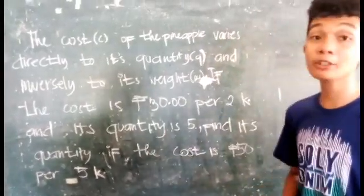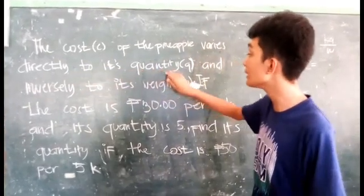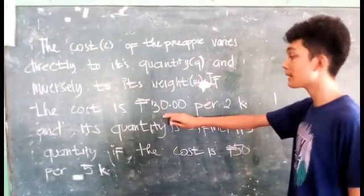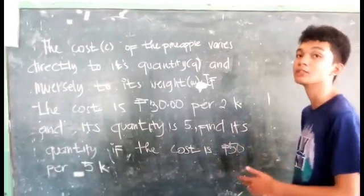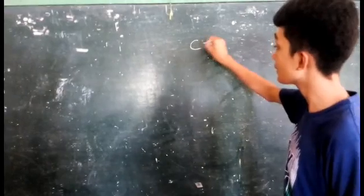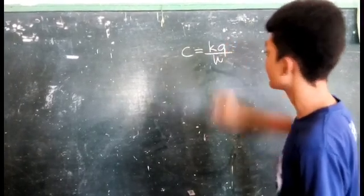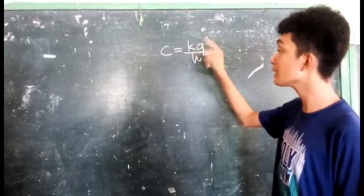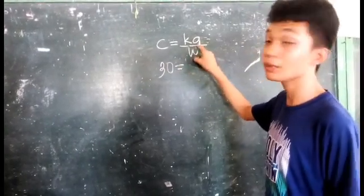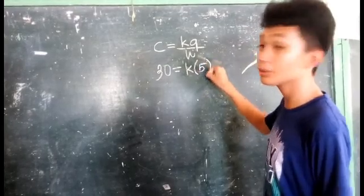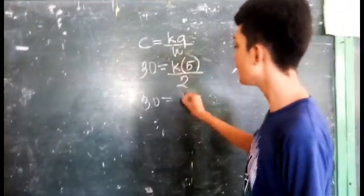This is the example of problem solving for combined variation. The cost C of the pineapple varies directly to its quantity Q and inversely to its weight W. If the cost is 30 pesos per 2 kilos and its quantity is 5, find its quantity if the cost is 50 pesos per 5 kilos. The formula is C equals K times Q over W. To solve this, we substitute C equals 30, Q equals 5, and W equals 2. So 30 equals 5K over 2.